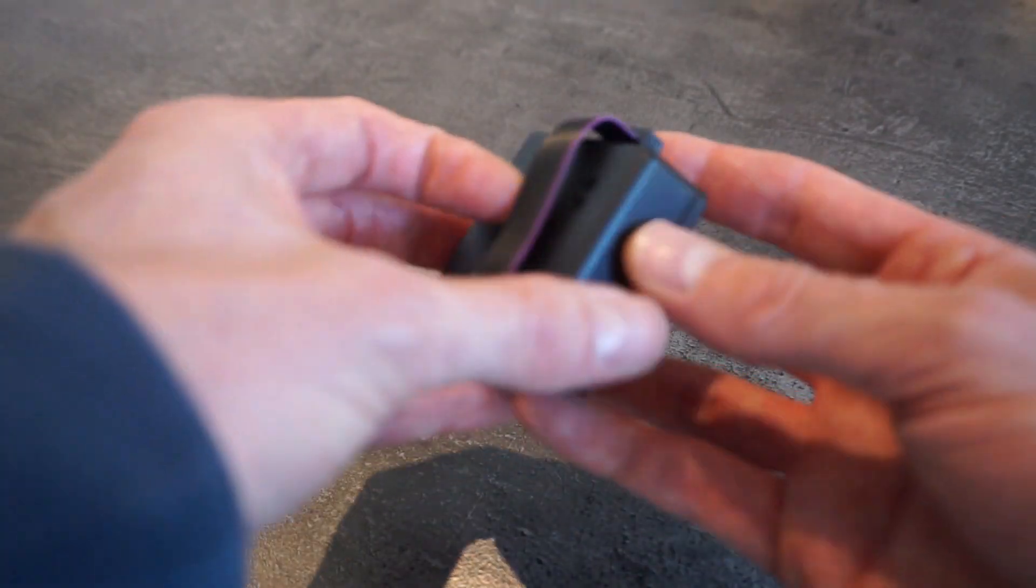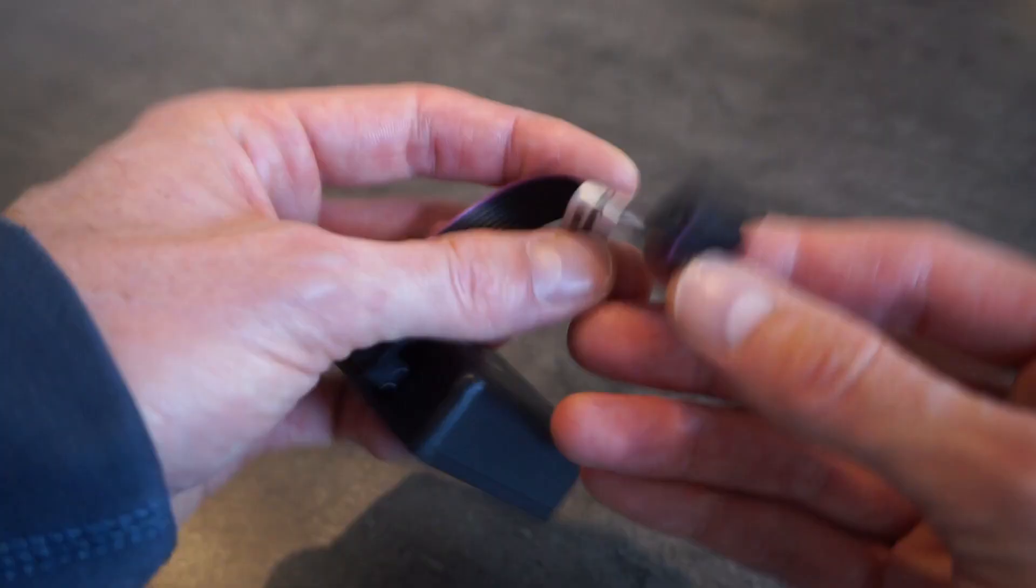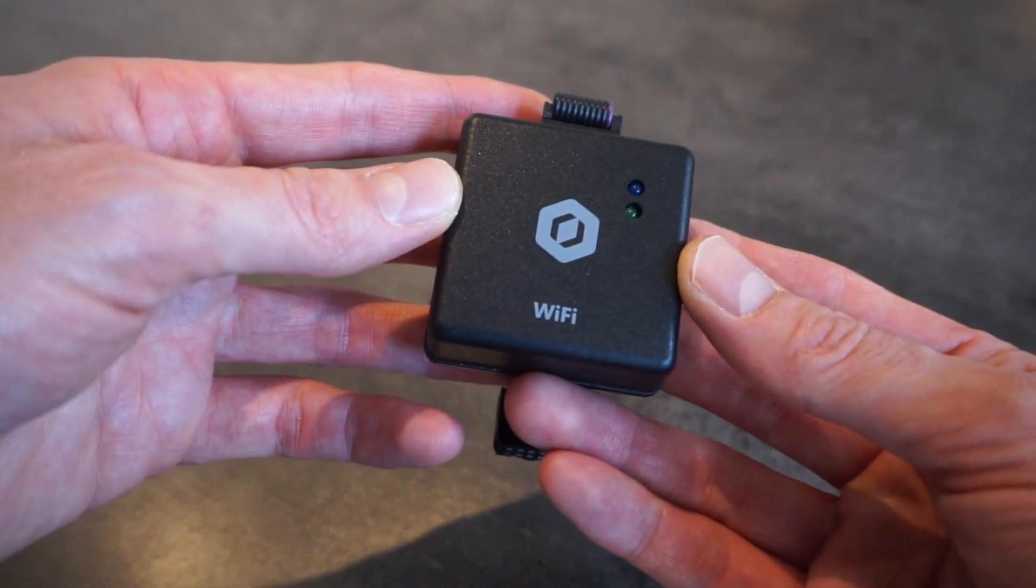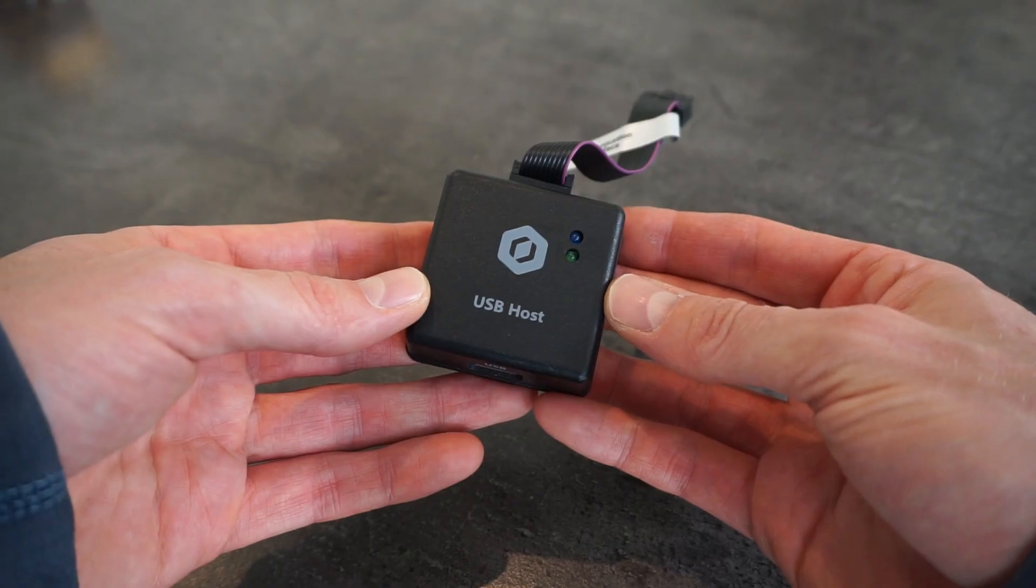A couple of breakout boxes are provided with the Dobot. A Bluetooth module, a WiFi module, and a USB host module. These units can be connected to a dedicated communication interface on the base of the robot arm.